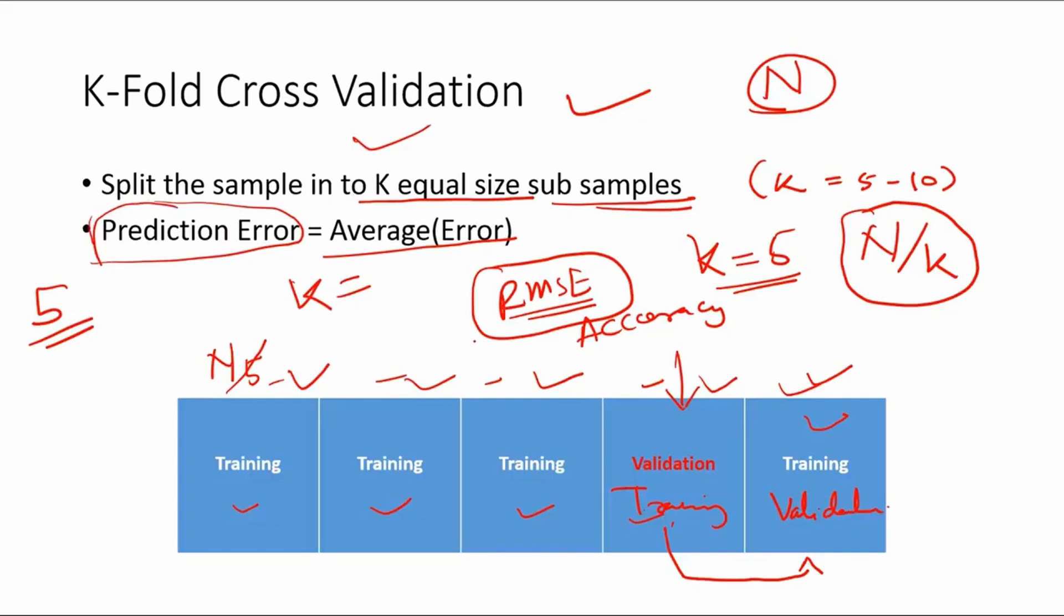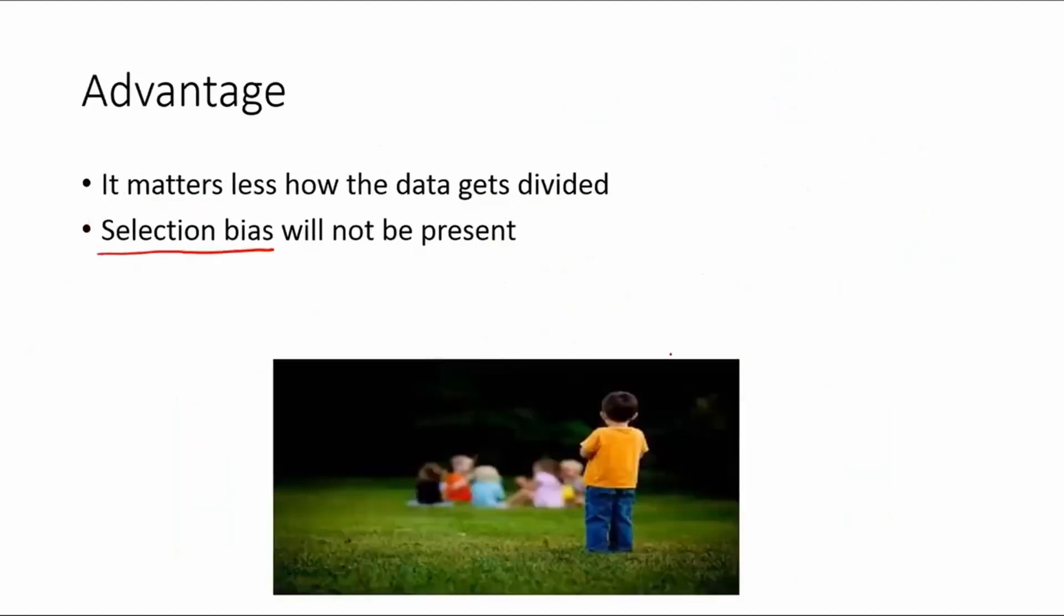Normally people take the k to be 5 to 10 because otherwise it takes a lot of computational time to do all these iterations. Here it's 5 subsamples, so we have just 5 iterations. If it is more, it will take a lot more time.